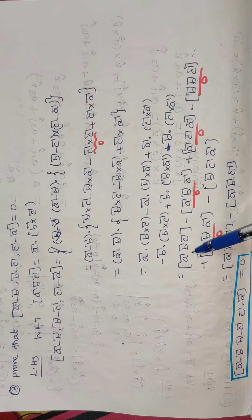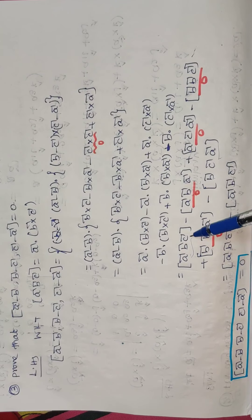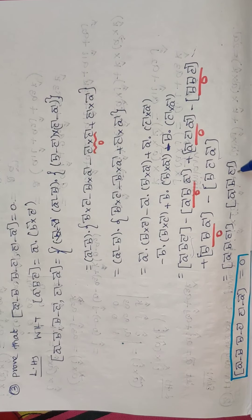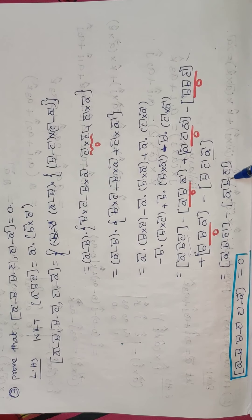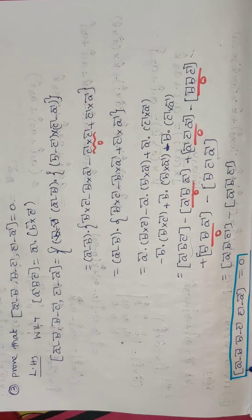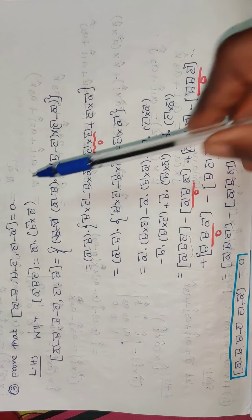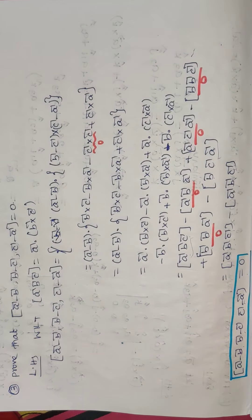We can write box[b,c,a] as box[a,b,c]. So we have box[a,b,c] minus box[a,b,c], which equals zero. Therefore, box of (a minus b), (b minus c), (c minus a) is equal to zero. That is our proof. Thank you children.